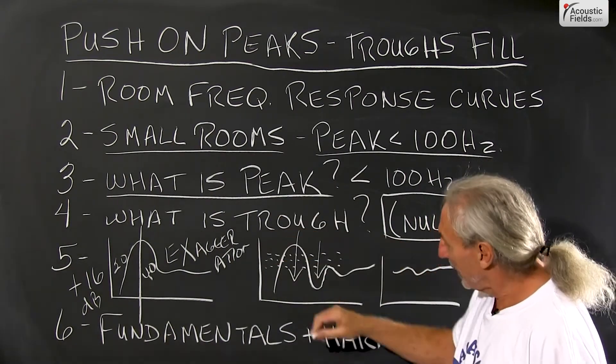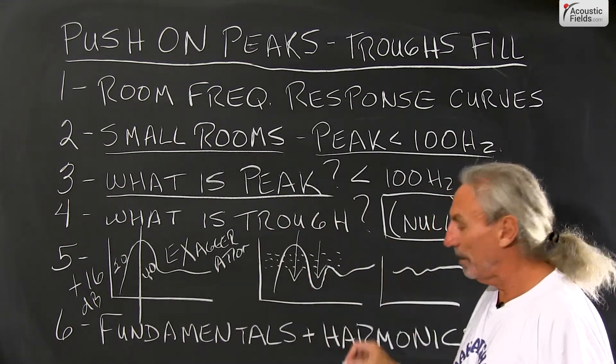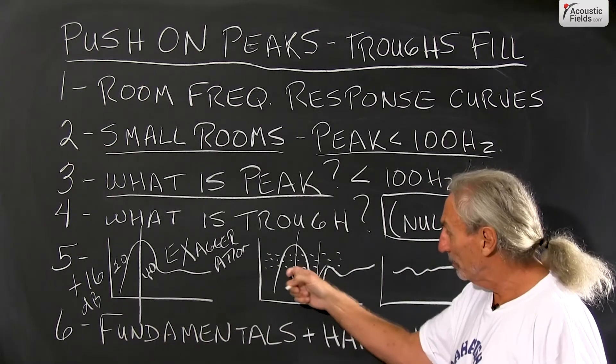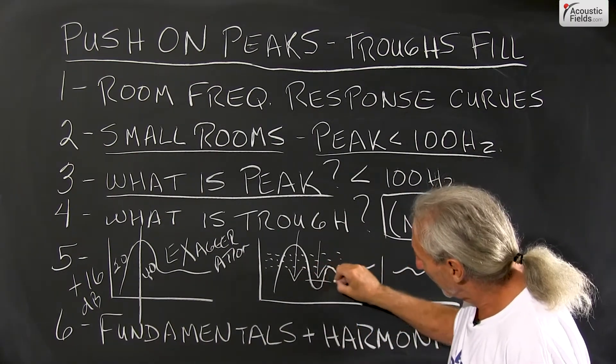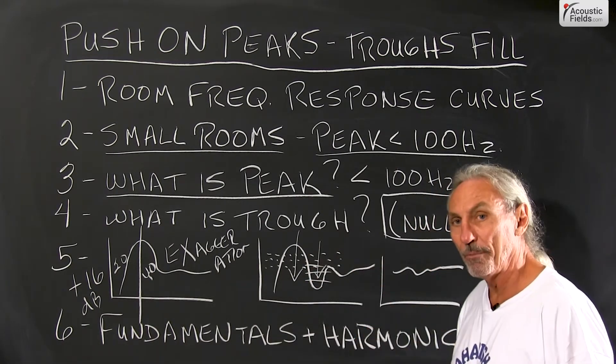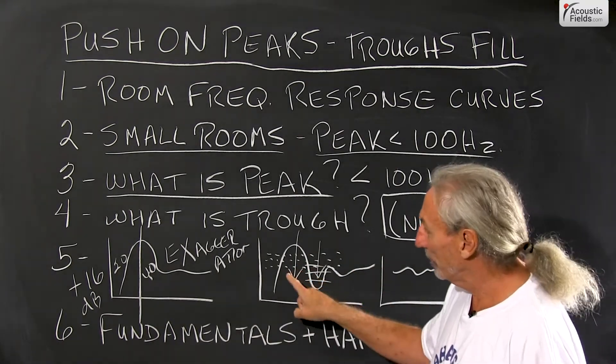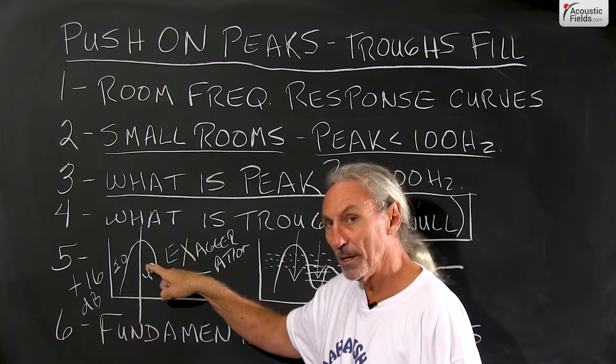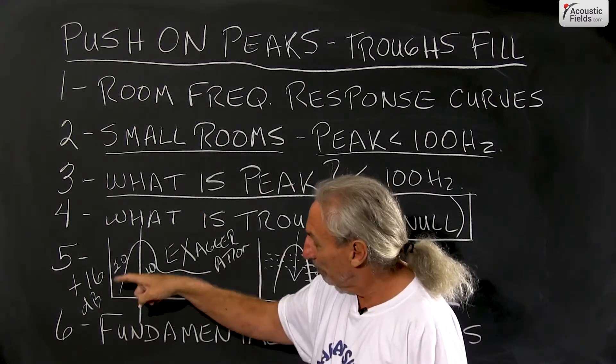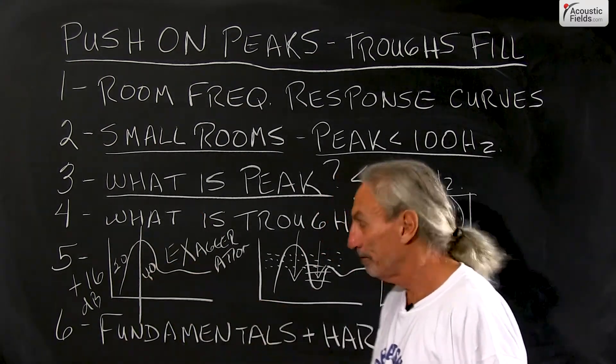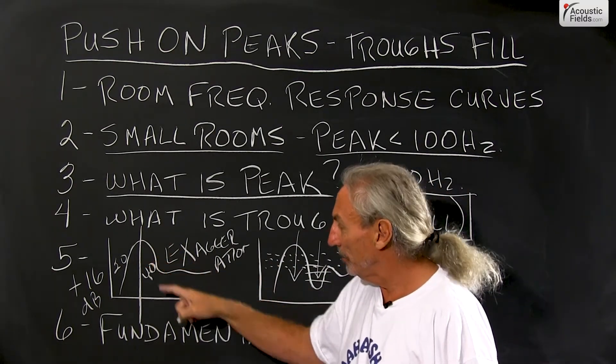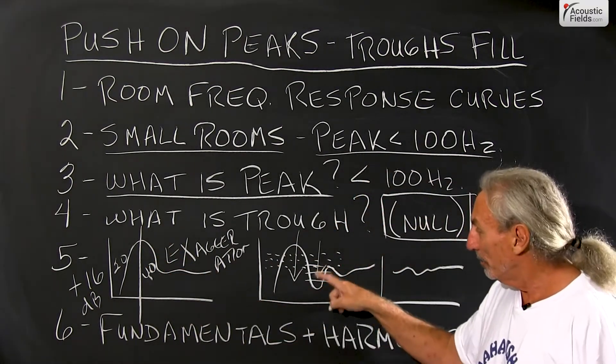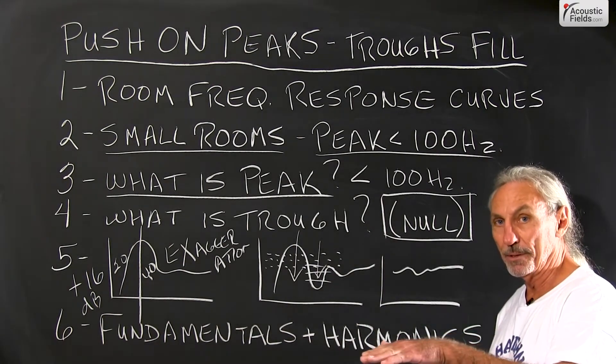Now if we push on the peak we have to realize that the trough where there's no energy is a direct relationship to the peak. So if we push on the peak the trough will kind of fill up for us because the trough is composed of the harmonics from the fundamental that cause the peak. So if we manage the fundamental and the harmonic energy that causes the peak our troughs will start to come into balance.